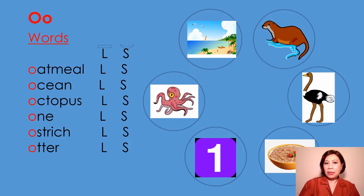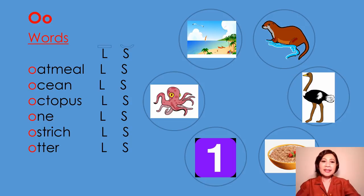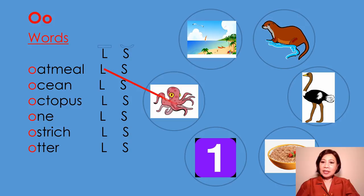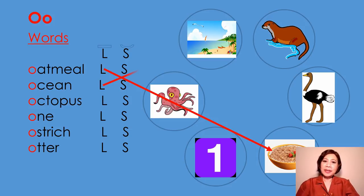Next is letter O. These are words that begin with letter O. Remember, O and A make one sound. O says /ō/ as in oatmeal. Oatmeal begins with long vowel sound. O says /ō/ as in ocean. Ocean begins with long vowel sound.